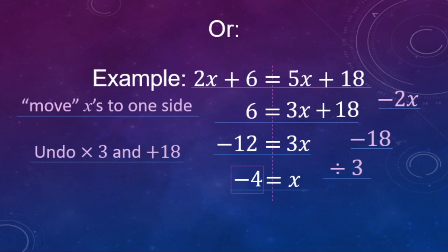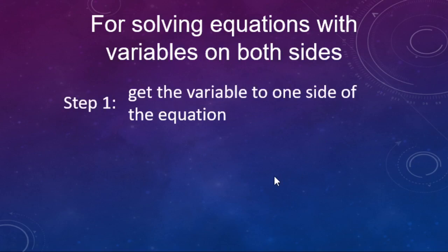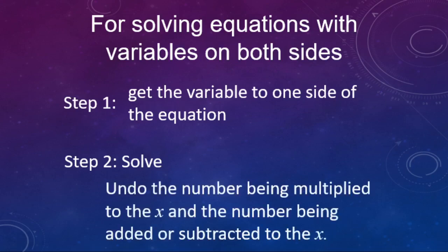For solving equations with variables on both sides, get the variables to one side of the equation or the other, and then undo what's being done to the x — the number that's being multiplied, and then the number that's being added or subtracted to the x. Hope this helps, and thanks for watching.